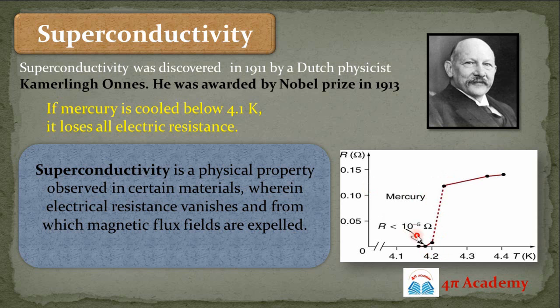And at this temperature, 4.1 Kelvin, suddenly the resistance drops down to zero — you can see it is 10 to the power minus 5 ohm, which is nearly zero. So this phenomenon, when the electric resistance of a substance drops down to zero, is known as superconductivity.